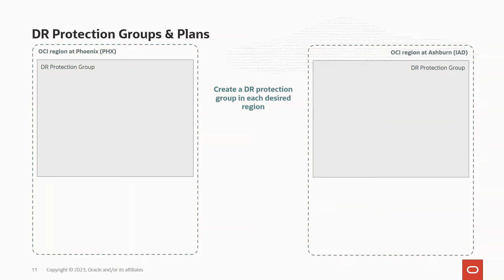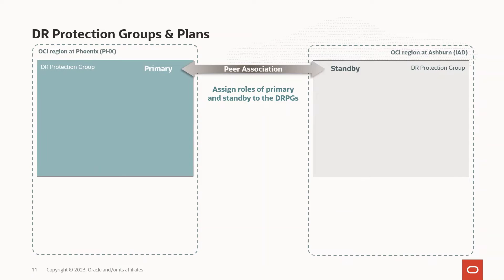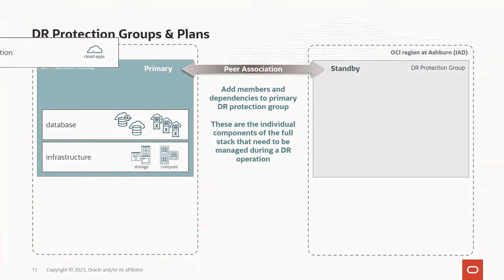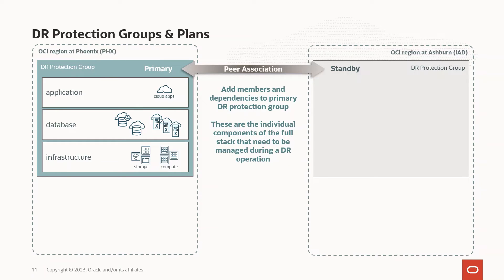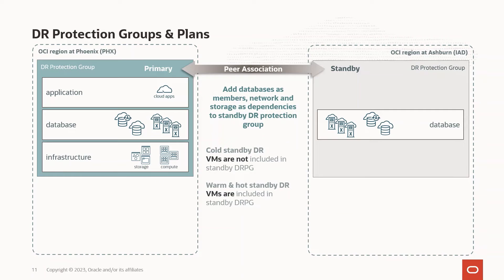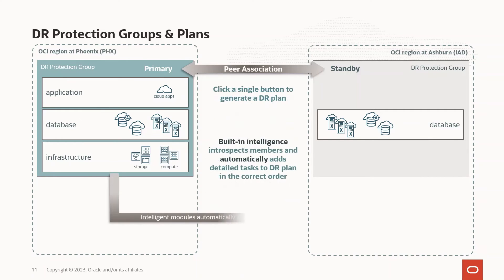Once all this has been configured and provisioned, you can create the DR Protection Group. A DR Protection Group is a logical collection of the components that you want to protect in a disaster recovery scenario. You need to create protection groups in both regions and then associate them with each other so they work together in unison. Once the protection groups are created, we assign the roles as primary and standby. Then you add the members — members are your various components: VMs, storage, databases, applications, etc. that work together as a unit. Add whatever members are at the standby side. This example is for cold standby, so the VMs are only seen on the primary side and not on the standby side.